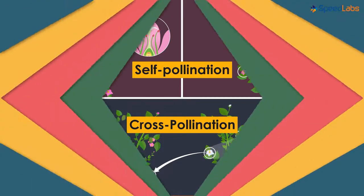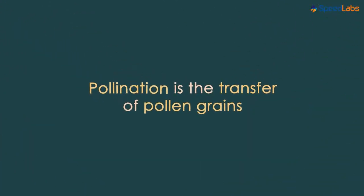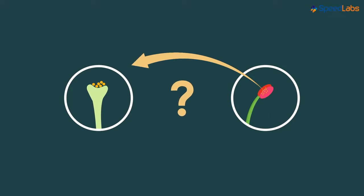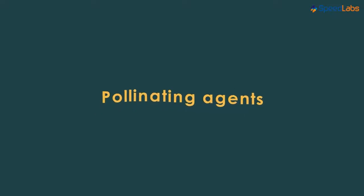Now tell me one thing. We are saying that pollination is the transfer of pollen grains, but who brings about the transfer? Who will carry out the translocation of pollen grains from the anther to the stigma of the same or different flowers? There are special agents that carry out the transfer. These are called pollinating agents.